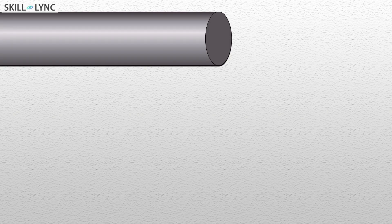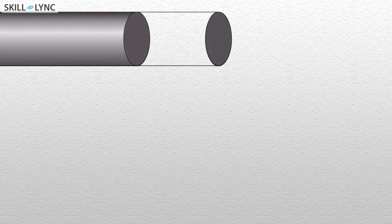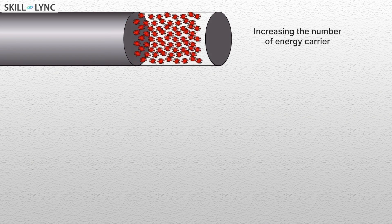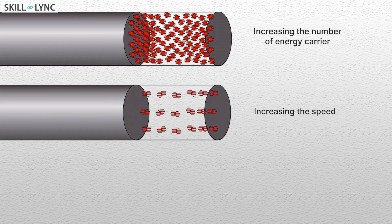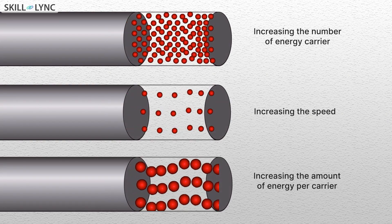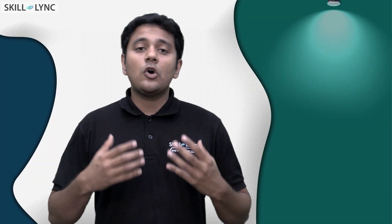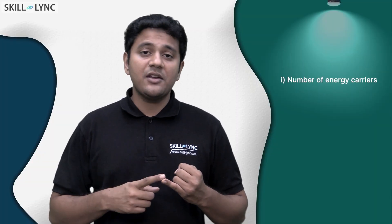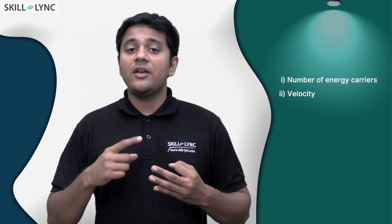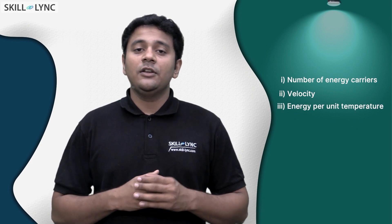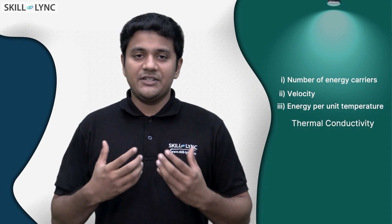With this simple idea, we can easily say that we can increase the heat transfer by increasing the number of energy carriers or by increasing their speed or by increasing the amount of energy per carrier. The product of all these three things—number of energy carriers, their velocity, and their energy per unit temperature—is what we refer to as thermal conductivity.